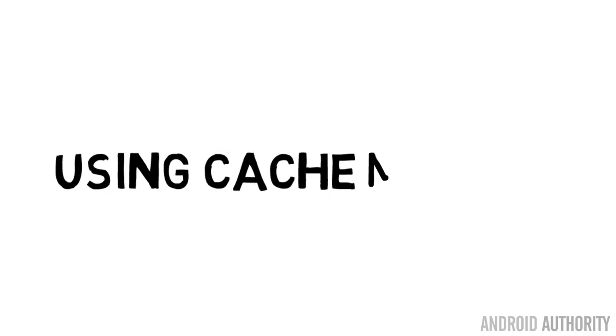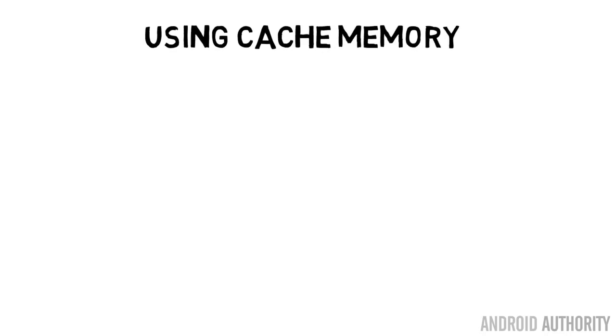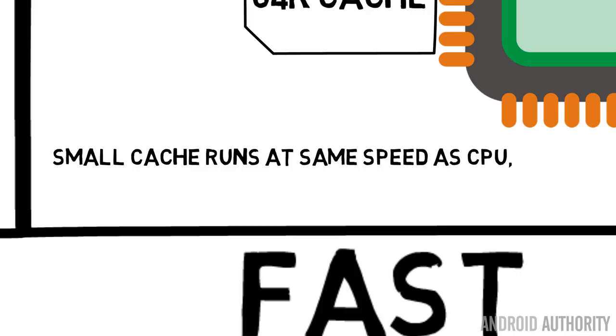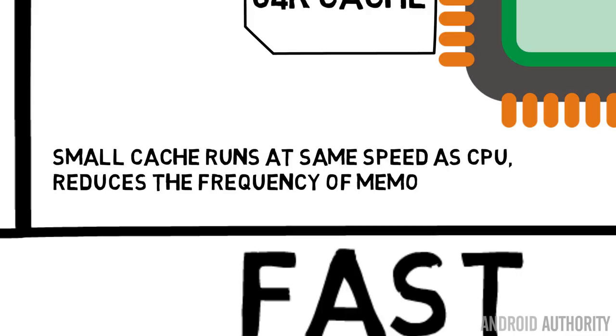So how does cache memory work? It stores a copy of information that's in main memory. When the CPU wants a particular piece of memory it asks the cache — if the cache has it, the CPU gets it at great speed, and that's called a cache hit. However, sometimes the cache won't have it, and the CPU has to go out to main memory to get it — that's called a cache miss. The greater the cache hits, the greater the performance; the more cache misses, the lower the performance. There are many different ways of filling the cache to make sure it has the optimum information in it.